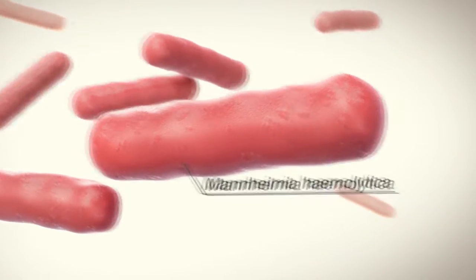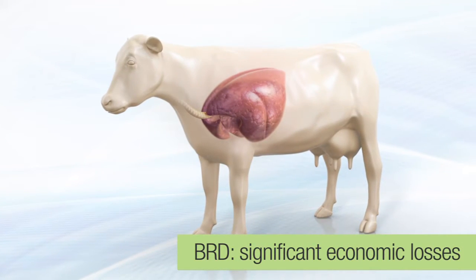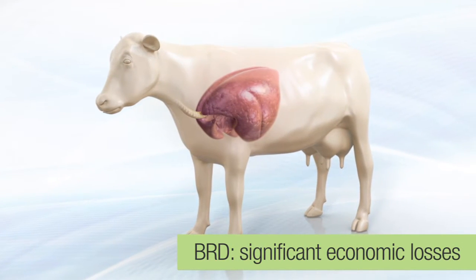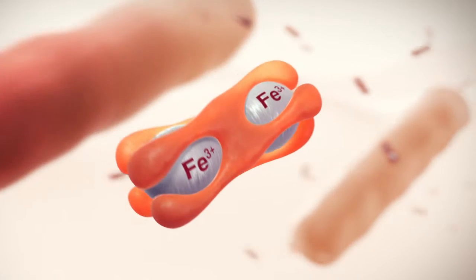Bacteria such as Mannheimia hemolytica can cause damage to the lung tissue leading to significant economic losses for producers. Bacteria need iron to survive and replicate.